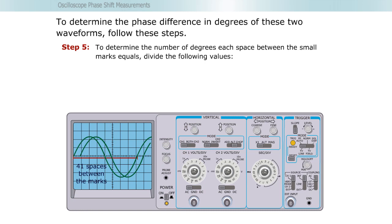Step five, to determine the number of degrees each space between the small marks equals, divide the following values. 360 degrees divided by 41 equals 8.78 degrees. So each space is rounded to 8.8 degrees.